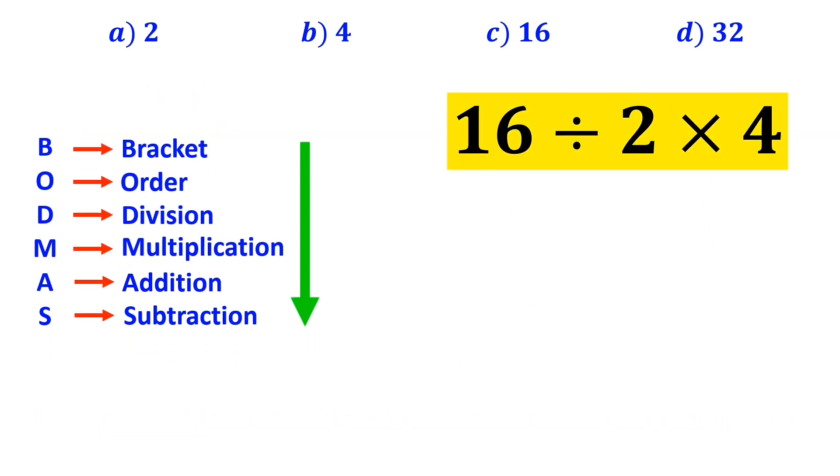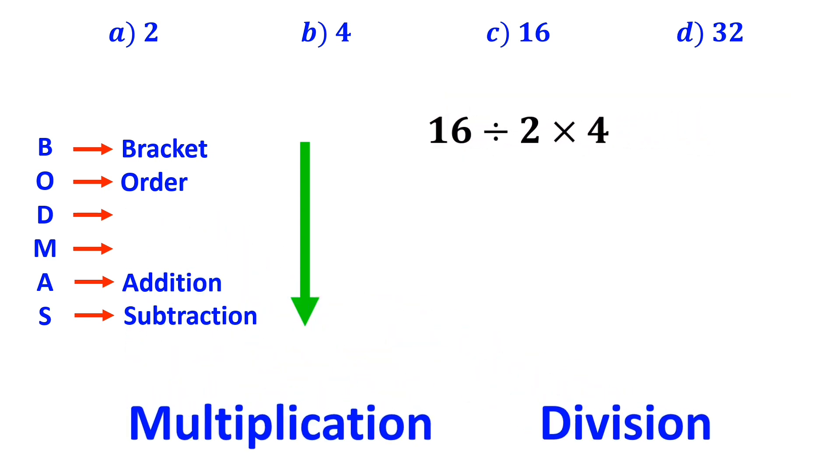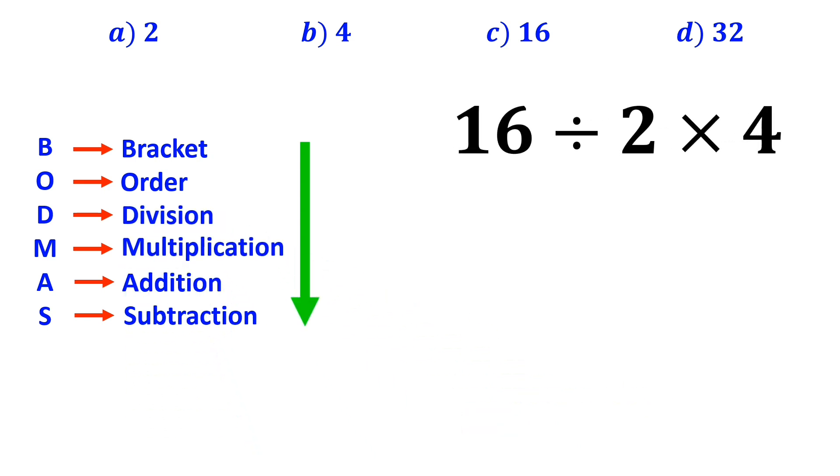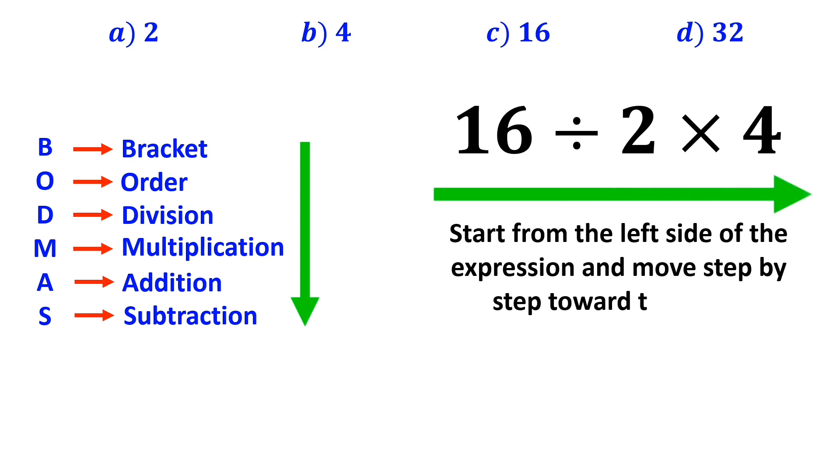Now, it's time to simplify this expression. It's very important to note that in the BODMAS rule, multiplication and division have exactly the same level of priority. In this case, all we need to do is to start from the left side of the expression and move step by step toward the right.